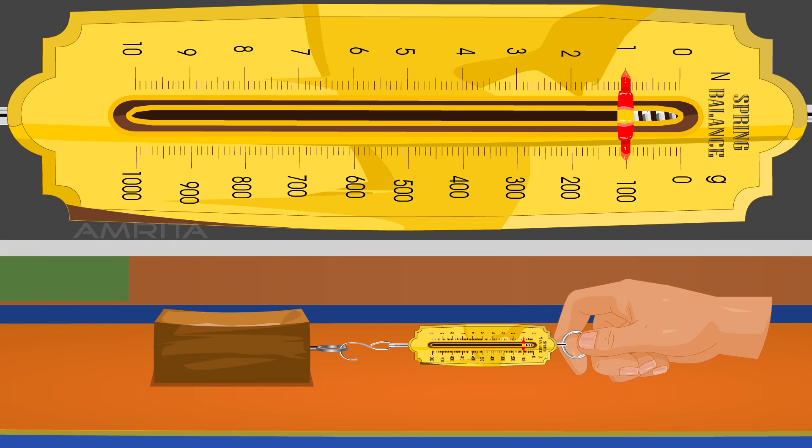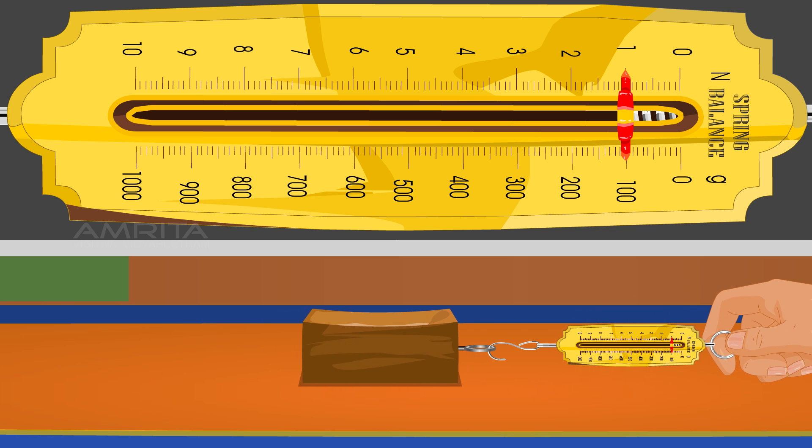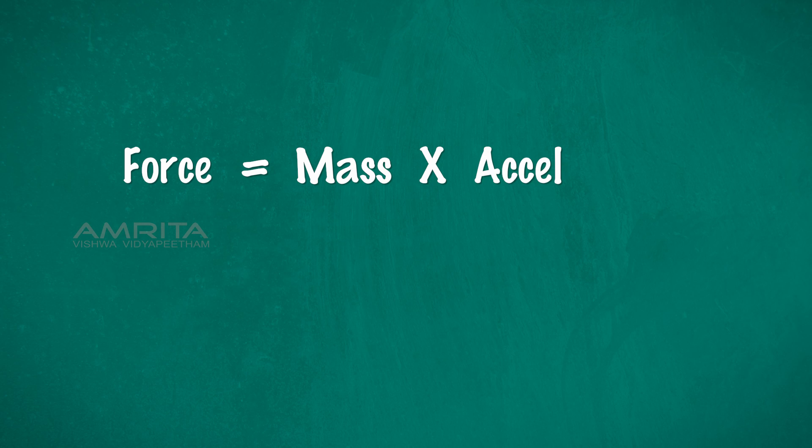To achieve a given acceleration, the force required will be larger for an object with more mass. This is represented mathematically in the formula: force equals mass times acceleration, which is F equals MA.